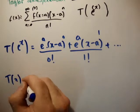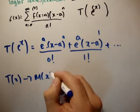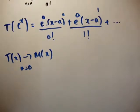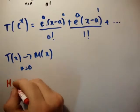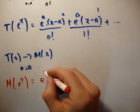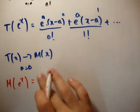So how do we go from Taylor of x to McLaren of x? Well, we set a is equal to 0, and you'll find that if you set a is equal to 0, we get the McLaren series of e to the x is equal to e to the 0 which is 1.